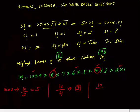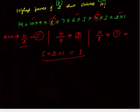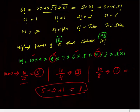Then divide 10 by 8: quotient is 1, so 1 multiple of 8 contributes more 2's. We find 2's in multiples of 2, then multiples of 4, then multiples of 8, and so on. So total number of 2's is 5 plus 2 plus 1 equals 8. The highest power of 2 in 10 factorial is 8.